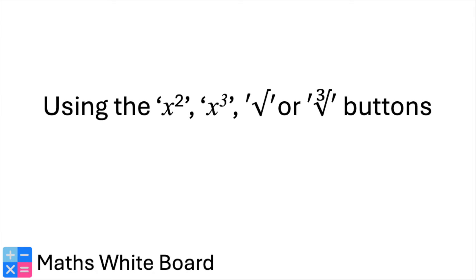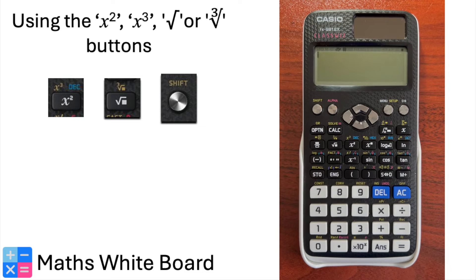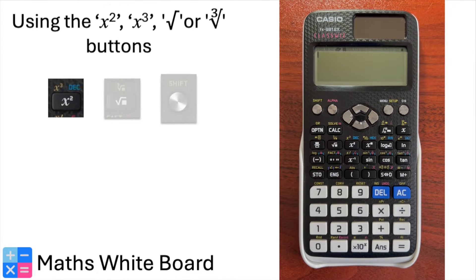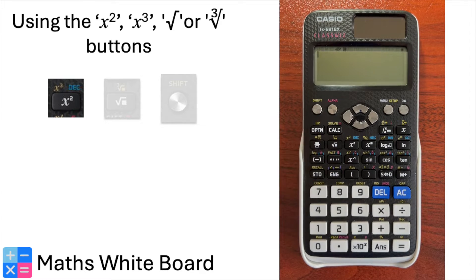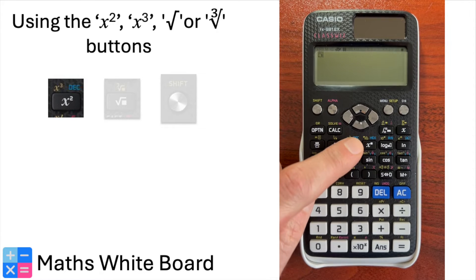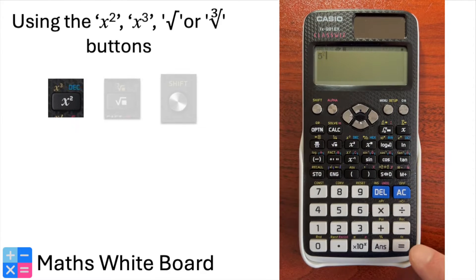In this instructional video, we'll explore the squared, cubed, square root, and cube root buttons. Let's start with squaring. Locate the squared button on your calculator — this button raises a number to the power of 2. For example, to square the number 5, enter 5, then press squared. The result will be 25.